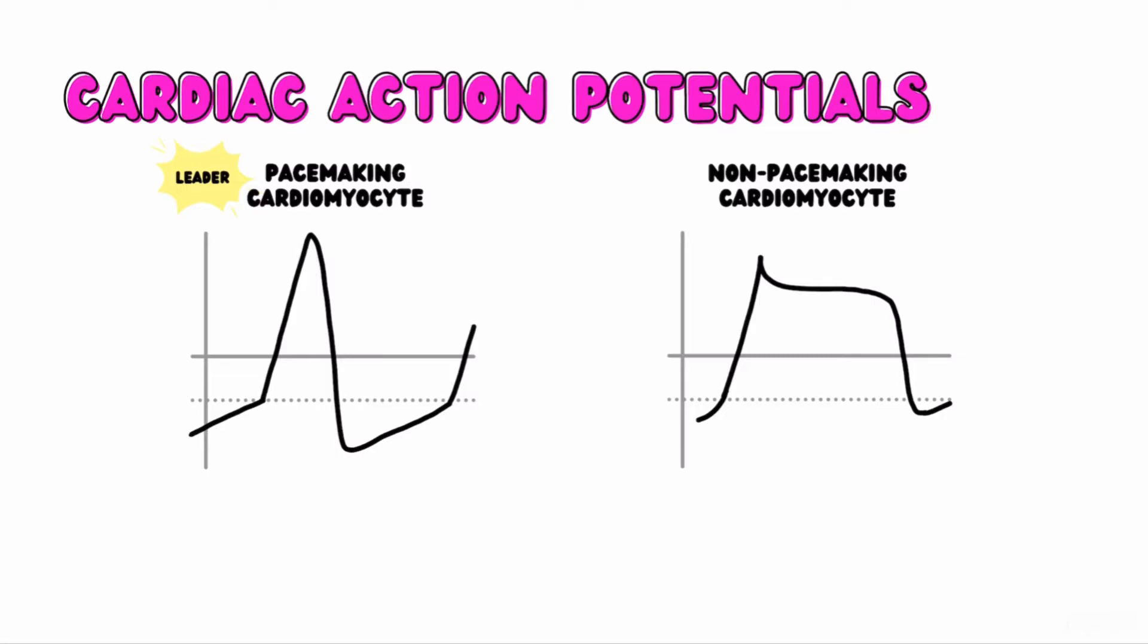The action potential of the pacemaking cell has three phases: Phase 0, phase 3, phase 4. This might sound like someone forgot how to count, but just follow me for a second. The action potential of the non-pacemaking cells include phase 0, phase 1, phase 2, phase 3, and phase 4. Let me show you.